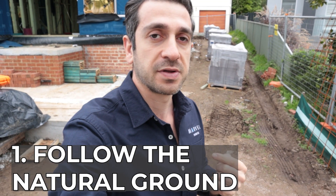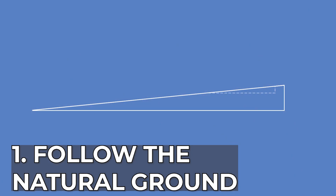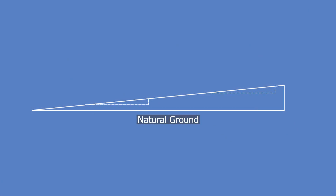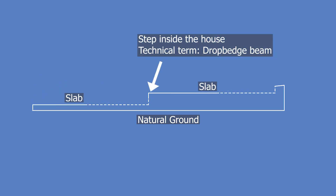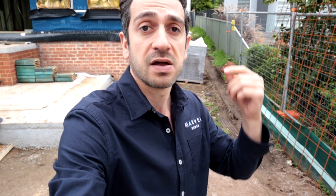There are three common scenarios for each sloped site in terms of cut and fill. Option one is we follow the natural ground — meaning we cut in some locations and backfill in others. What that gives you is steps inside the house, or drop edge beams within your slab. So if you've been to a house where there are steps within the lounge room to get to the living room, those are slabs that followed natural ground.